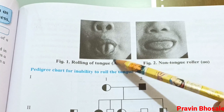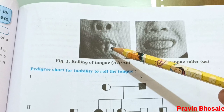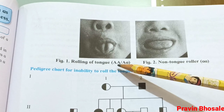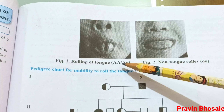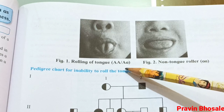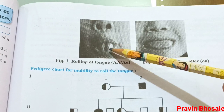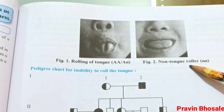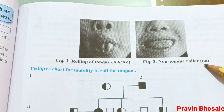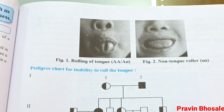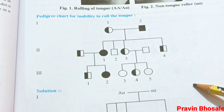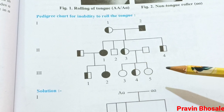In figure one, you can see the rolling of tongue because the individual has either capital A capital A (homozygous dominant) or capital A small a (heterozygous). The person is able to roll the tongue. A non-tongue roller has small a small a, that is recessive. So if this chart is shown, you have to identify it as a pedigree chart for inability to roll the tongue.